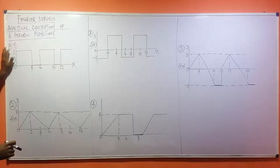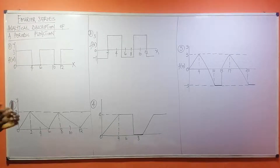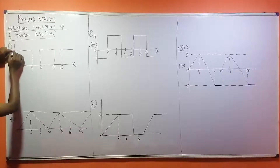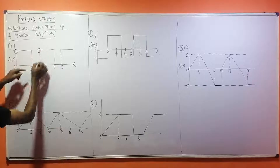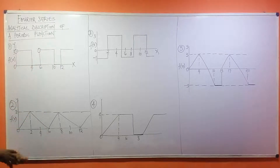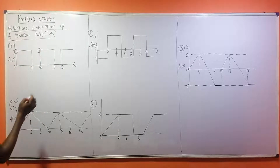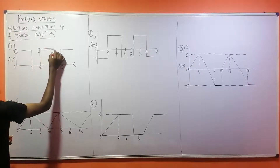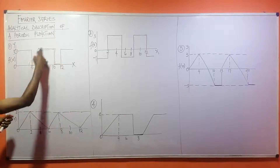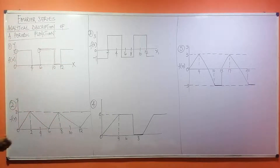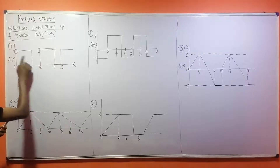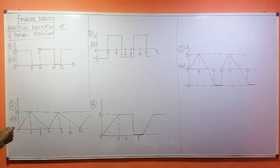I can conclude that in this function, six will become the period. If you look carefully, this is where the function started, at three, and you'll notice it also repeats here. Comparing these two parts, they are the same. So I only need to analyze from here to this part.